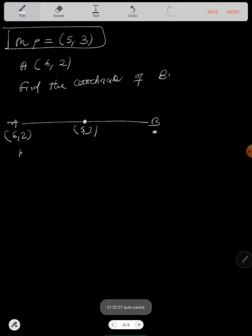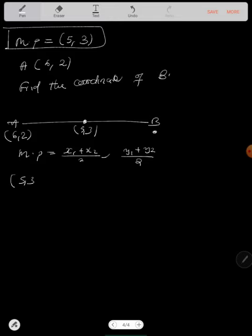So we know that midpoint is equal to X1 plus X2 divided by 2 comma Y1 plus Y2 divided by 2. Now, midpoint here is 5 comma 3. This will be X1 here, 6 plus X2. Let's just call it X, it's part of B here.